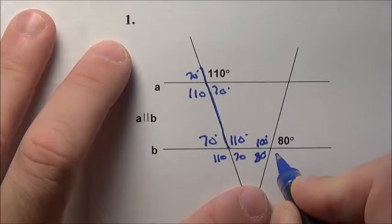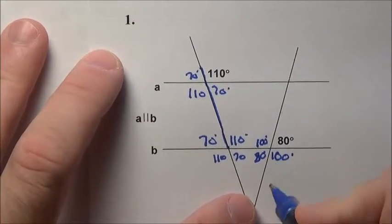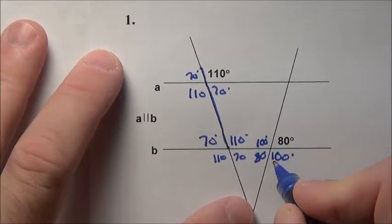If that's 80, its vertical angle right here is 80, and right here is going to be 100 also because of the vertical angle there, or a straight line here if you want to look sideways.